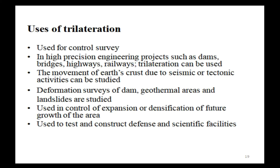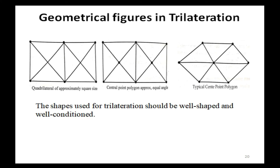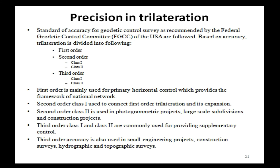Geometric figures in trilateration: the shapes used for trilateration should be well-shaped and well-conditioned. Precision in trilateration: standards of accuracy for geodetic control surveys as recommended by the Federal Geodetic Control Committee (FGCC) of the USA are followed. Based on accuracy, trilateration is divided into three types: first order, second order, and third order. Second order is of two types: class 1 and class 2. Third order is also of two types: class 1 and class 2.